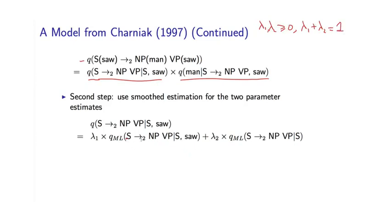What do I have here? I have two maximum likelihood estimates. If we look at this first one, it's going to be estimated as the count of S goes to NP VP saw, with VP as head, divided by the count of S saw. That maximum likelihood estimate is basically an estimate of the probability of S saw rewriting with this particular rule. It's a very natural, simple, intuitive estimate.